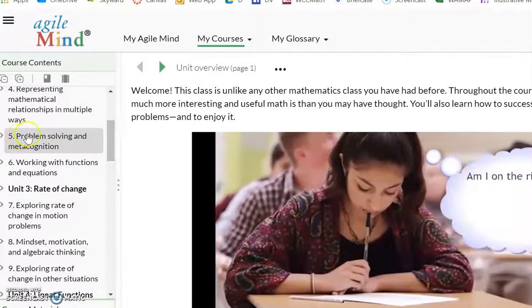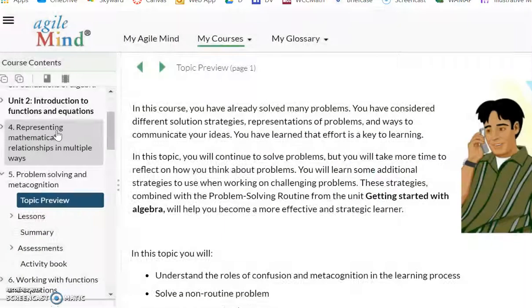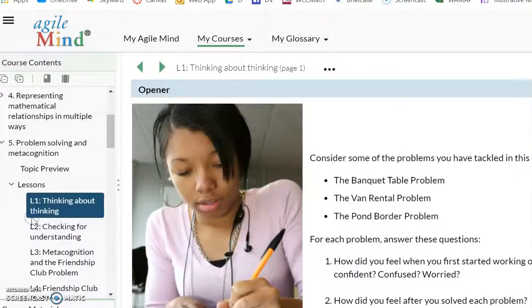I would go here to section 5, topic 5, and then these would be the slides that we see in class. Over here, topic preview, if you wanted to see the slides that we did, here's all the lessons, but we want to get to the activity book.